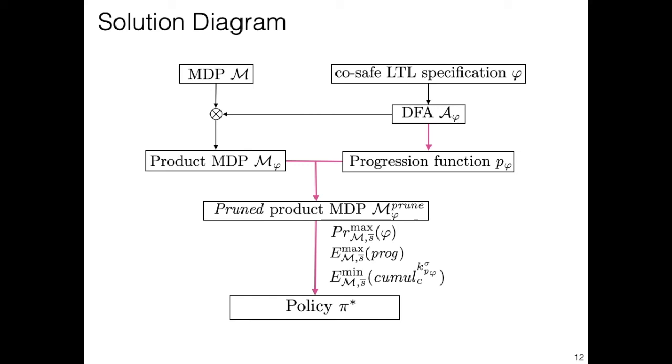We now present the overall diagram of our framework. Arrows in pink represent the contribution of our partial satisfiability approach. We start with the MDP model M and the Cosafe specification PHI. PHI is translated into a deterministic finite automaton using known techniques. And then the product MDP of the original MDP with the DFA representing PHI is built, also using known techniques. This product MDP augments the state space of the original MDP with the information required to keep track of the satisfaction of PHI.